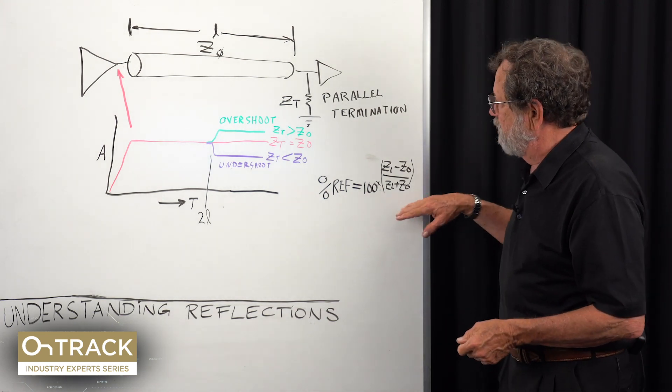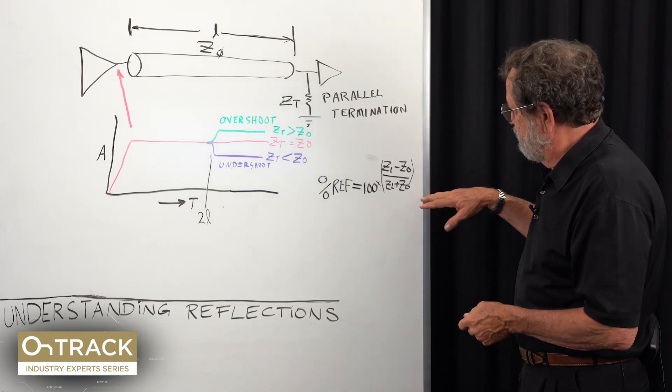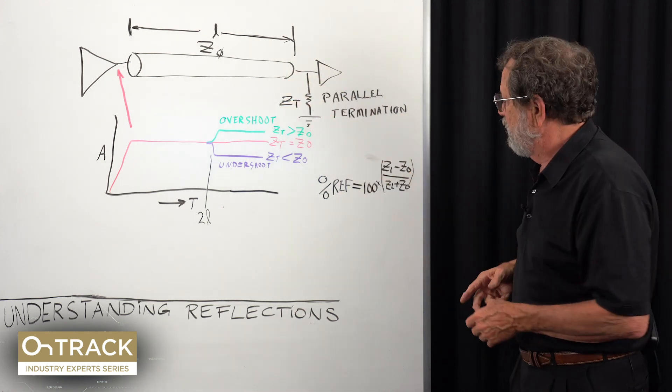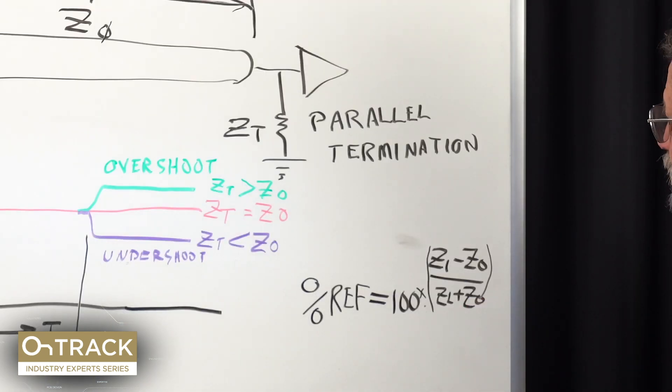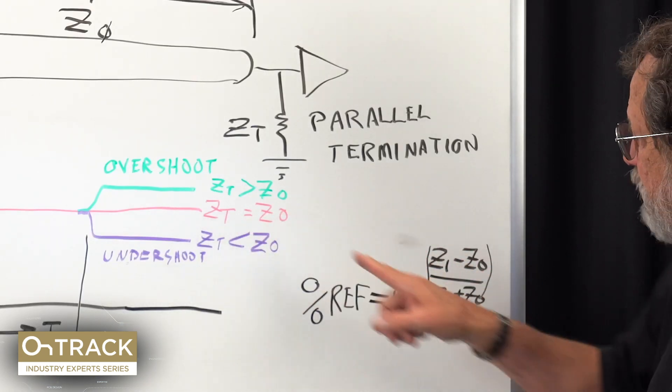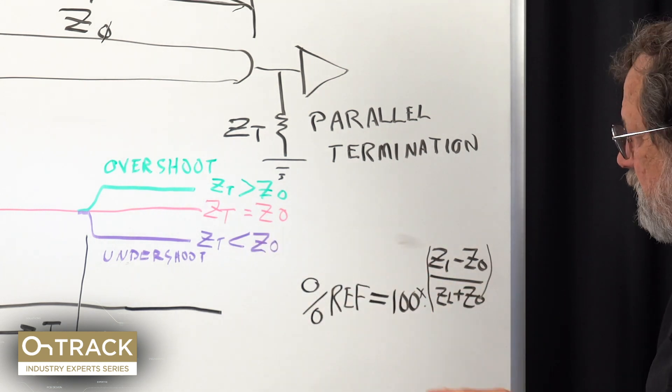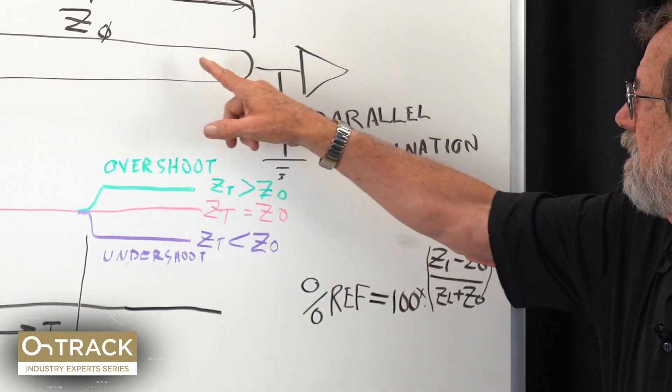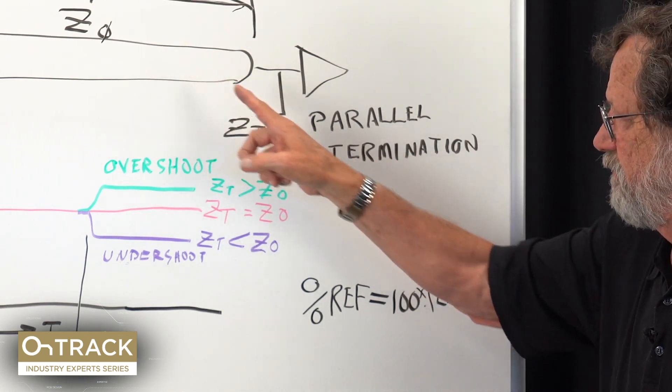I've got an equation right here—might be hard to read—but it allows you to calculate how much reflection you'll get based on the degree of mismatch. What it says is that Z_L is the downstream impedance, Z_0 is the upstream impedance. When Z_L is larger than Z_0, we will get a positive reflection.